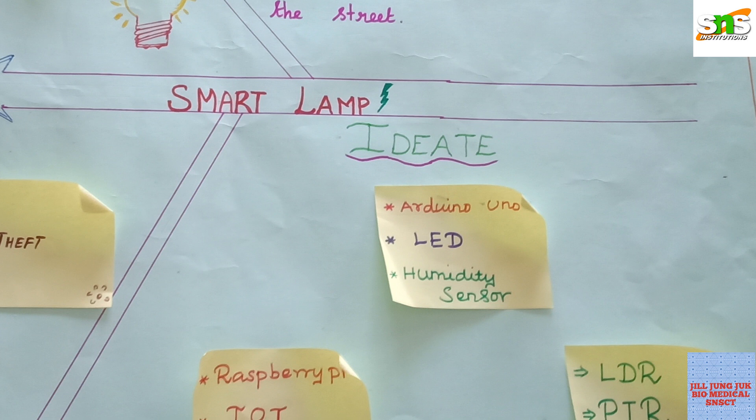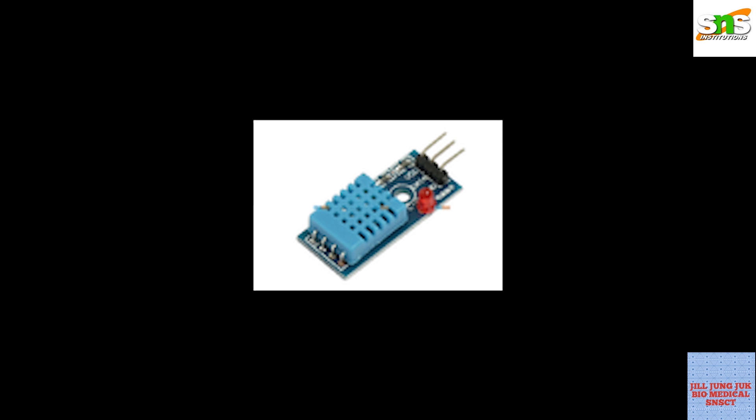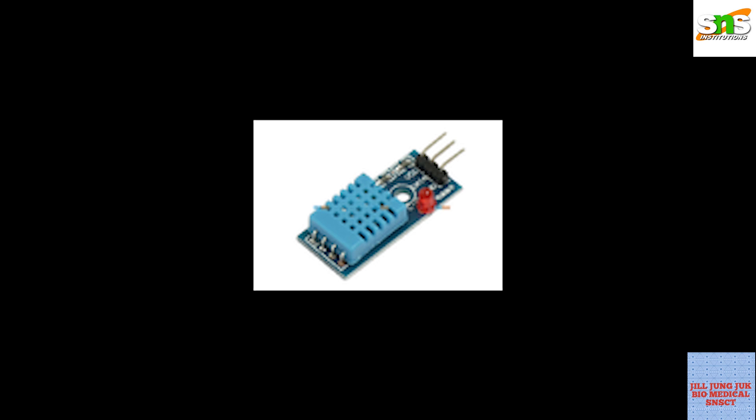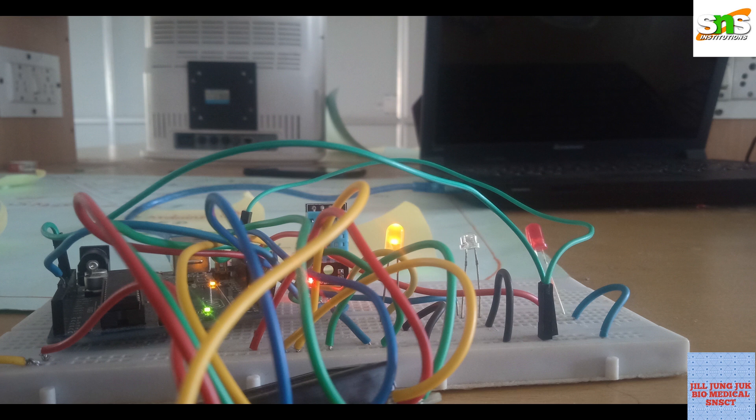Our ideate part uses an Arduino UNO as a microcontroller, an LED as the lighting system, and a DHT11 humidity and temperature sensor. We designed the circuit and connected an LCD board to display the temperature readings.